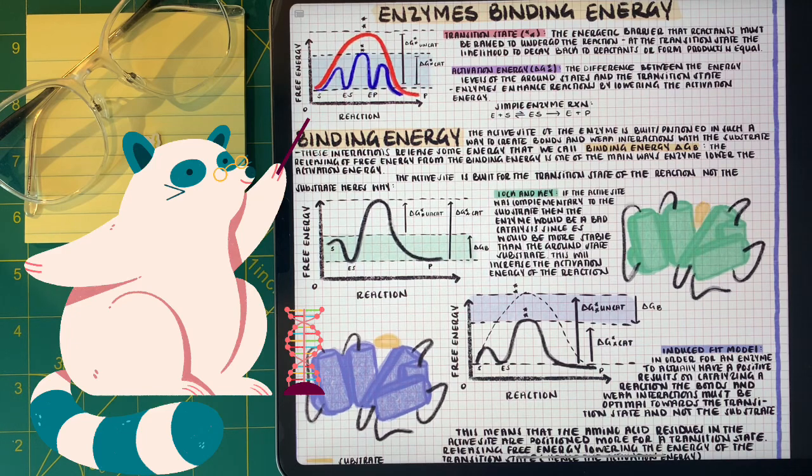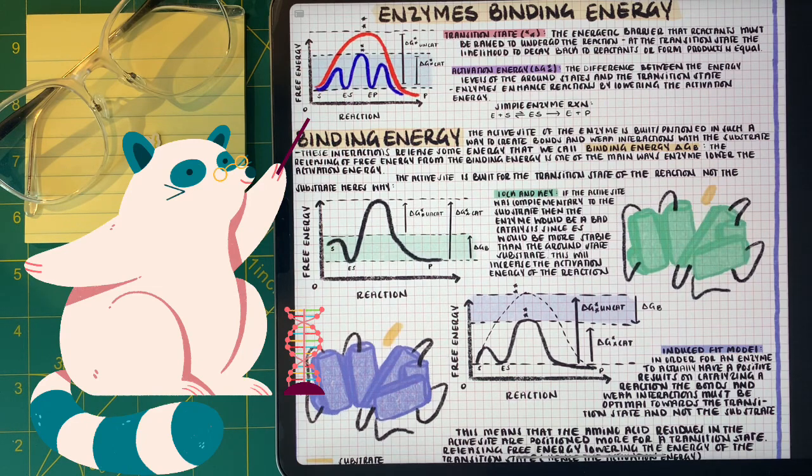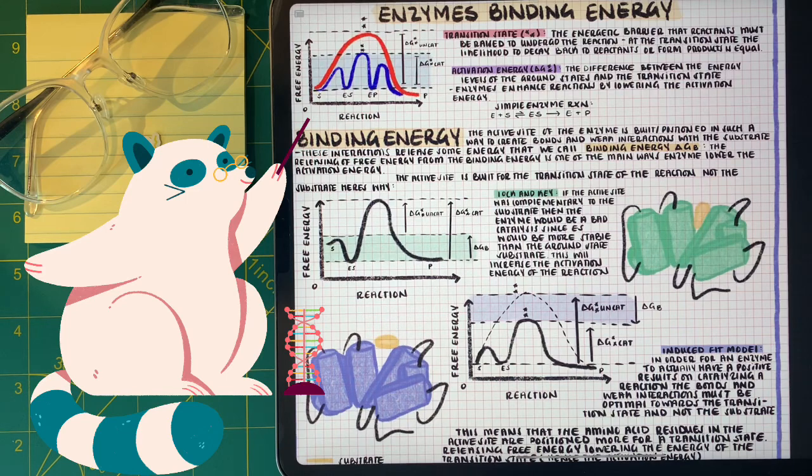And that's what we're going to talk about now. Now there's two competing models to how enzymes react. Lock and key, as in the enzyme is the perfect fit for the substrate, and induced fit, that means that the enzyme slightly changes to accommodate the incoming substrate. And we're going to talk about why one is more beneficial for enzyme kinetics than the other.